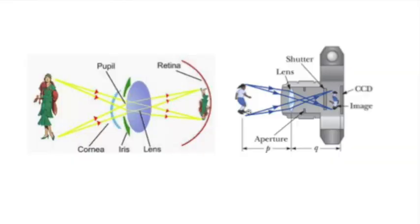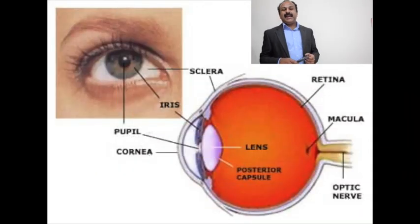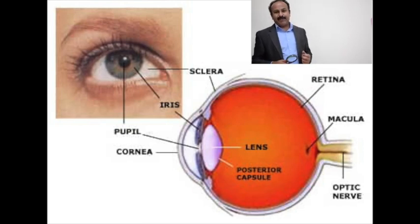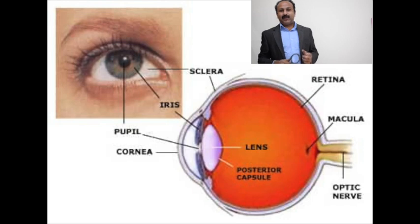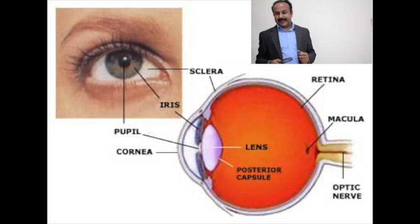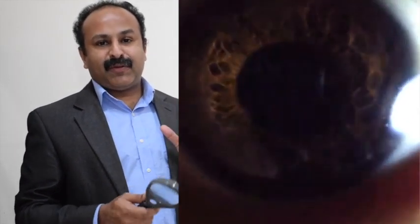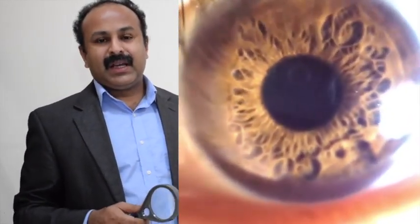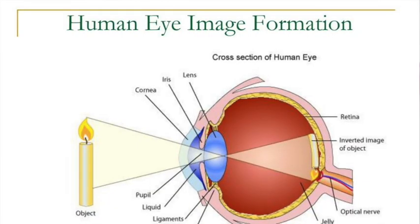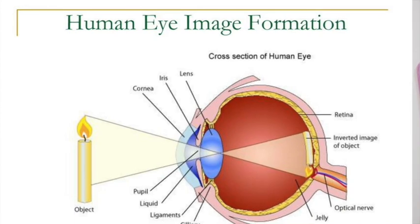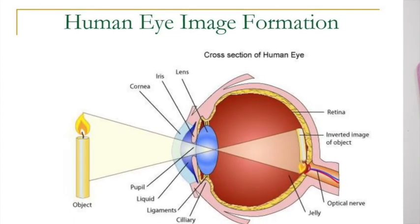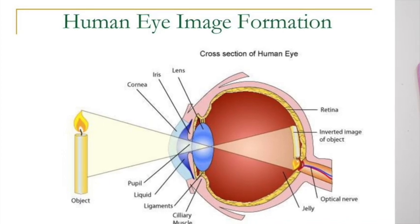Light enters the human eye through a transparent portion called the cornea. Behind the cornea there is the iris, a dark muscular diaphragm that controls the size of the pupil. The pupil regulates the amount of light entering the human eye. You can see how the size of the pupil changes when the amount of light changes. When light passes through the eye lens — which is actually a crystalline lens that can adjust its focal length — an inverted image is formed on the retina.